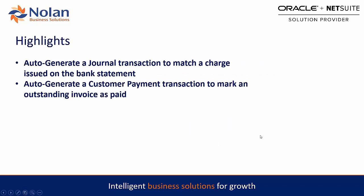The first case we're going to go over today is to auto-create a journal transaction to match a charge coming in on the bank statement. For example, this could be a recurring bank charge you may get once a month or once a quarter that you don't want your reconciliation team to manually create. You want the rule to automatically pick up that bank charge within a tolerance and then automatically post a journal entry accounting for it.